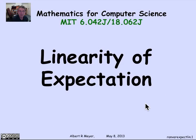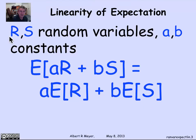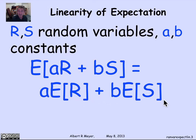We've been saving for last the property that makes expectation calculating really easy and short circuits a lot of the ingenious methods we've used up until now. Namely, expectation is linear. If you have two random variables r and s, and two constants a and b, then the expectation of ar plus bs is equal to a times the expectation of r plus b times the expectation of s. Expectation is linear.